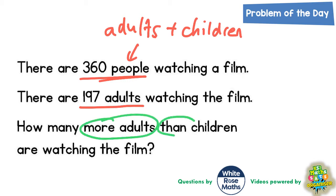We can do this in two steps. First, we need to figure out how many children there are, because we can't say how many more adults than children there are if we don't know how many children there are. What we do know is that there are 197 adults.